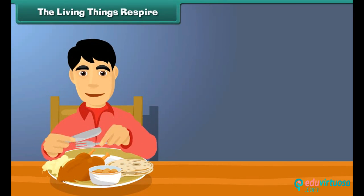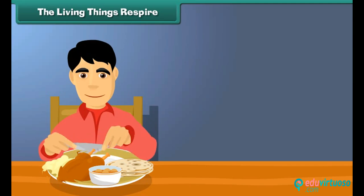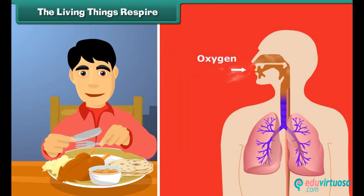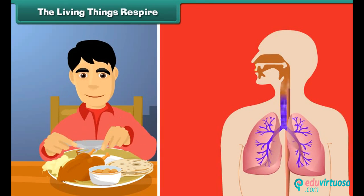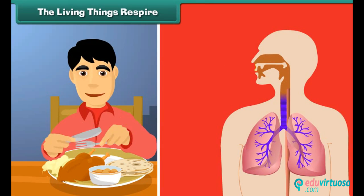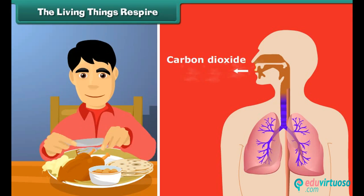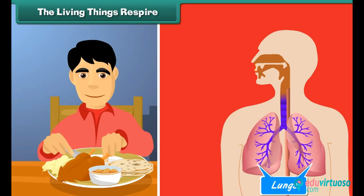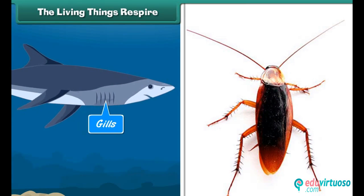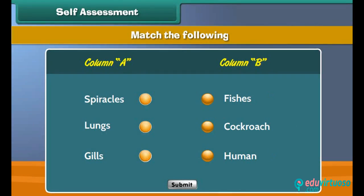Living things get the required oxygen through the process of respiration. During respiration, oxygen is breathed in and, through the blood, it reaches each and every cell of the body. Human beings have lungs for respiration, fishes have gills, and cockroaches have spiracles.